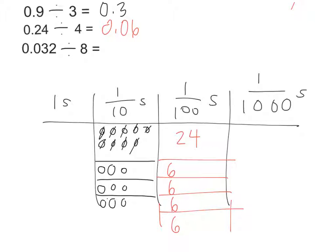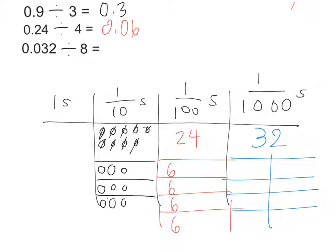Same idea with thousandths. The third problem has 32 thousandths. I write 32 in the thousandths column and want to share equally into 8 groups. How many go in each group? Ashwin says 4. So I put 4 in group 1, 2, 3, 4, 5, 6, 7, 8. When I share 32 thousandths equally by 8 groups, each group gets 4 thousandths, or 0.004.